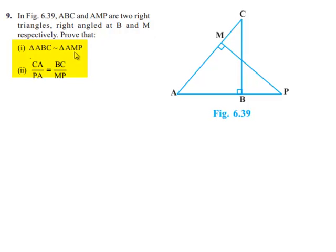Prove that triangle ABC is similar to triangle AMP, and second thing, CA by PA is equal to BC by MP. Now moving on to the solution.